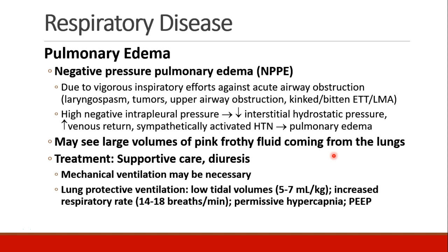One specific type of pulmonary edema I'd like to discuss is negative pressure pulmonary edema. This occurs when a patient vigorously tries to breathe in but there's an airway obstruction. The obstruction could be laryngospasm, which is one of the most common post-anesthesia causes of NPPE, or a tumor, or upper airway obstruction like in an obese patient or someone who has sleep apnea, or if the endotracheal tube becomes kinked, or if the patient bites on it — and it can happen with an LMA as well as a tube. These patients are breathing in very hard, and it especially happens in younger, stronger patients who take a big deep breath against a closed airway, generating very high negative intrapleural pressures. A normal breath in only needs an intrapleural pressure of about minus one, but these patients can generate negative pressures of minus 50 to even minus 100.